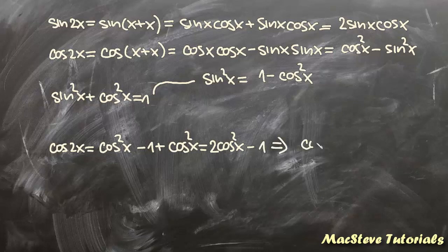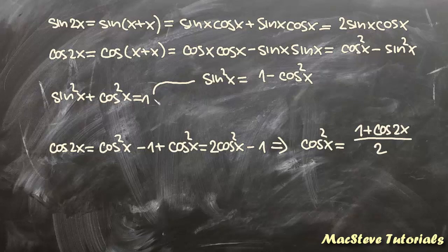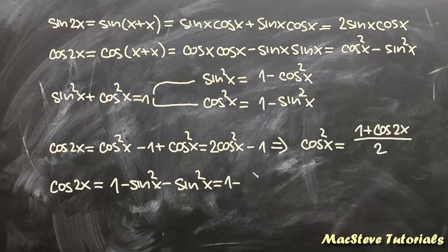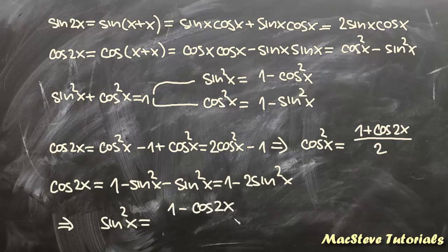From that result you get cos²x = (1 + cos2x)/2. Now let's do the same for sin²x: express cos²x as 1 − sin²x and replace it in the formula for cos2x. You get 1 − sin²x − sin²x = 1 − 2sin²x. And from here you get sin²x = (1 − cos2x)/2.